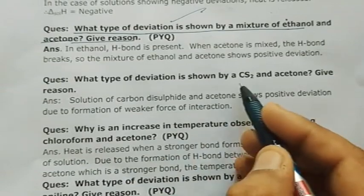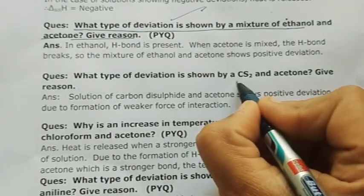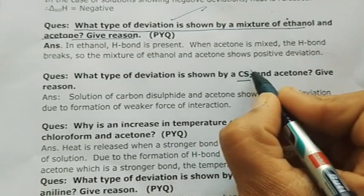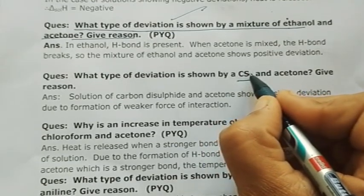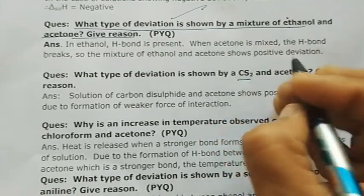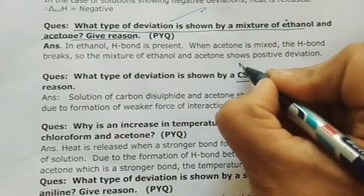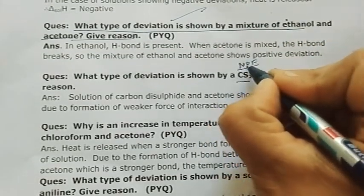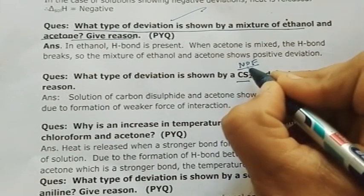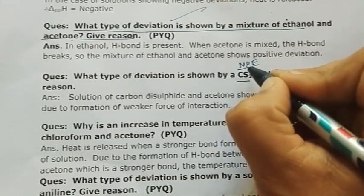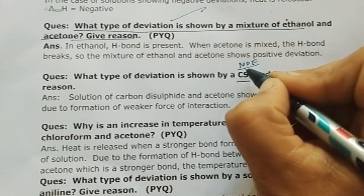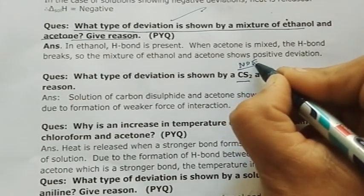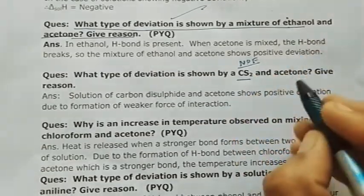Next question: what type of deviation is shown by CS2 (carbon disulfide) and acetone? CS2 has no H-bond — there is no H involved, and no electronegative element like nitrogen, oxygen, or fluorine. For H-bond to form, you need N, O, or F — CS2 has none of these.